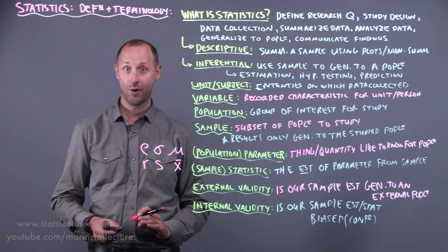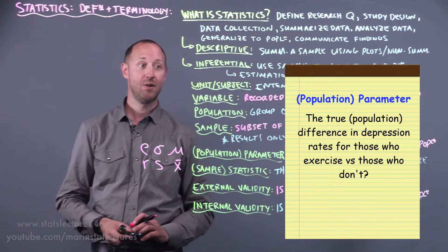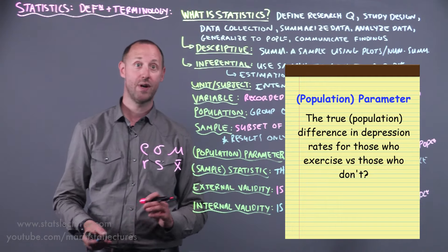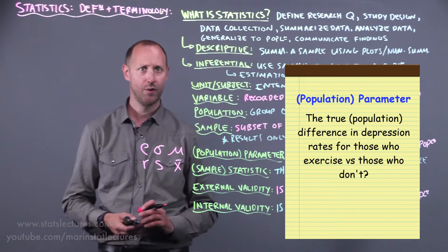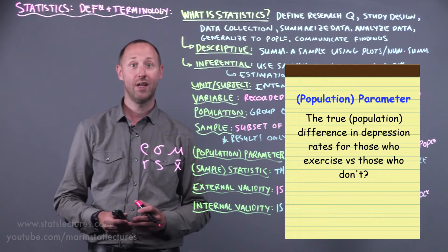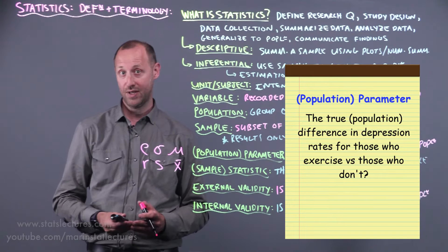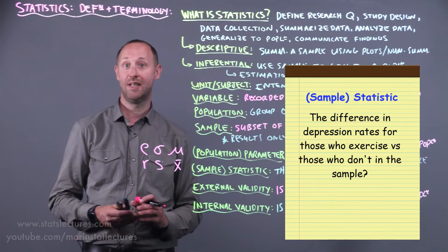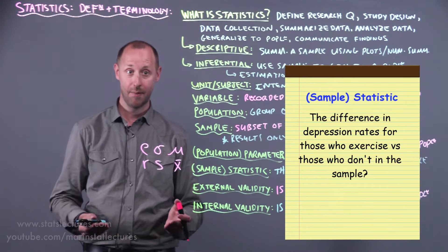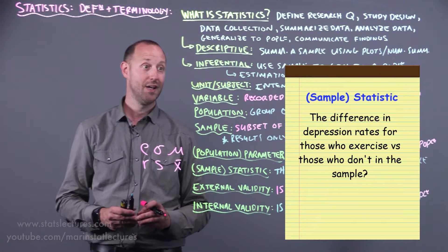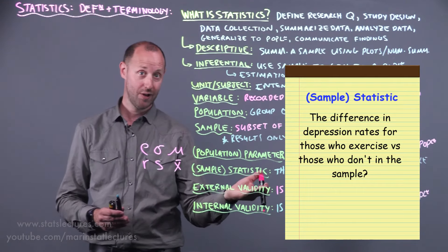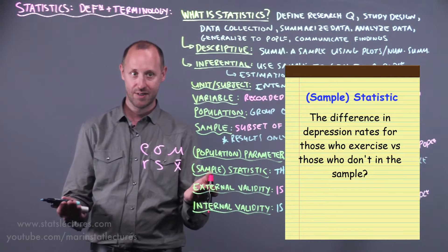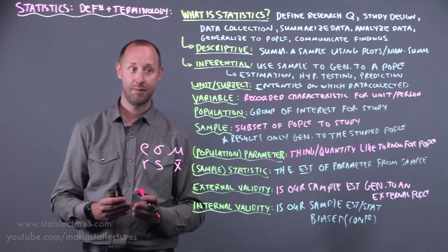What's our parameter, our population parameter of interest? That's going to be what is the true or the population difference in depression rates for those who exercise regularly and those who don't. So we want to know how does the rate or likelihood of depression decrease if you're exercising regularly. Our sample statistic is going to be what was the difference in depression rates in our sample. So we look at what proportion of people who exercise regularly are depressed, what proportion of people who don't exercise regularly are depressed, and we take the difference in our sample. That's our sample statistic.